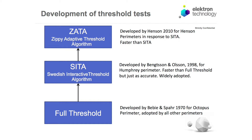CETA came out in 1998, so that's about 15 years ago. In those 15 years, we've learnt a lot more about glaucoma and the problems of detecting it. ZATA builds upon CETA using the same basic ZEST algorithms, but going a little stage further. Let me show you how it does this.